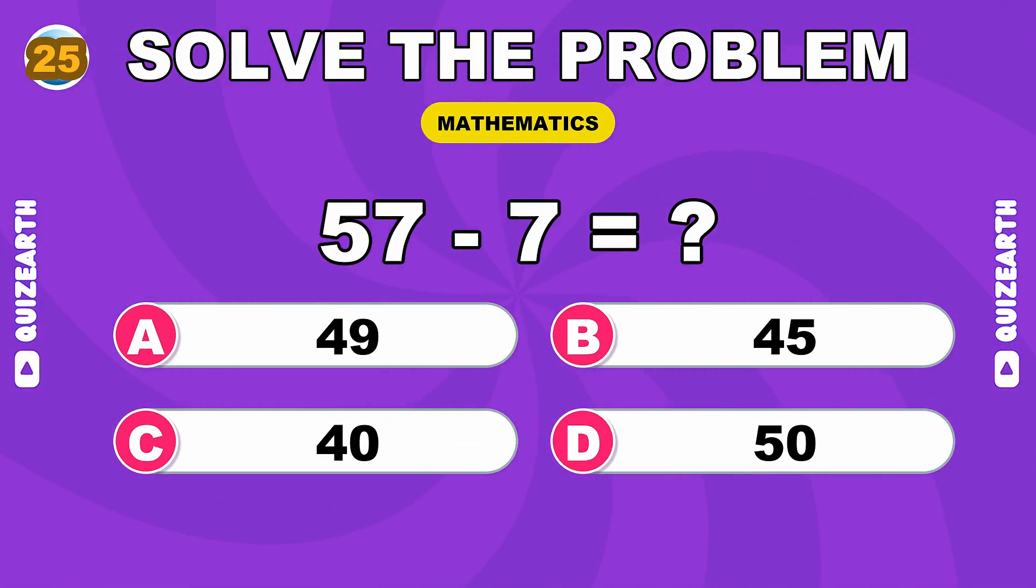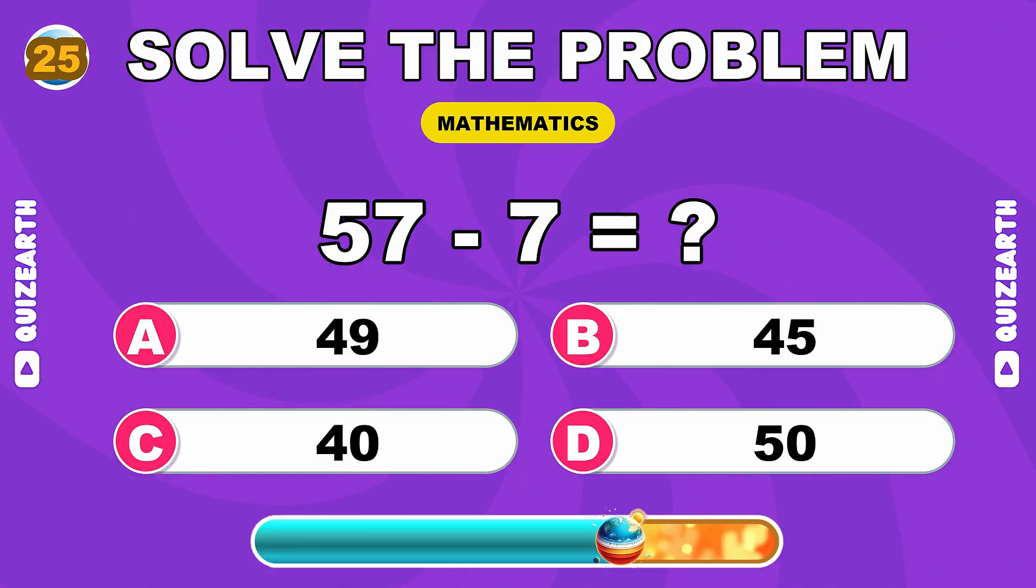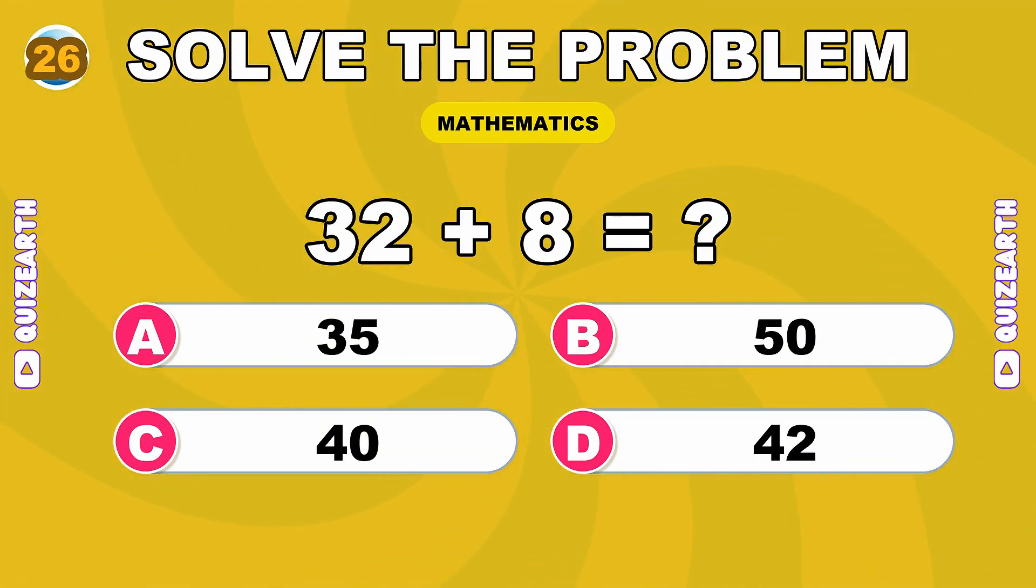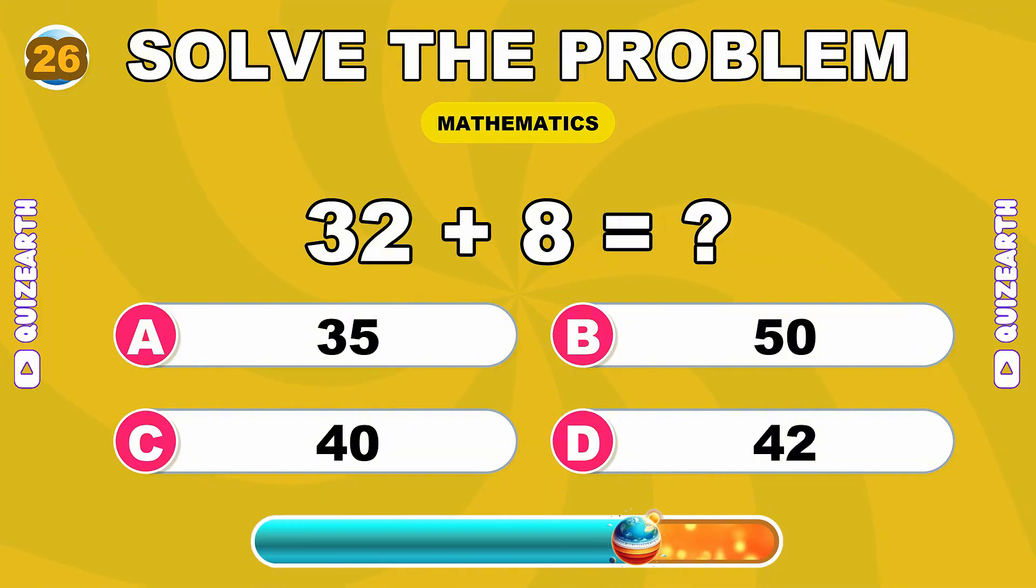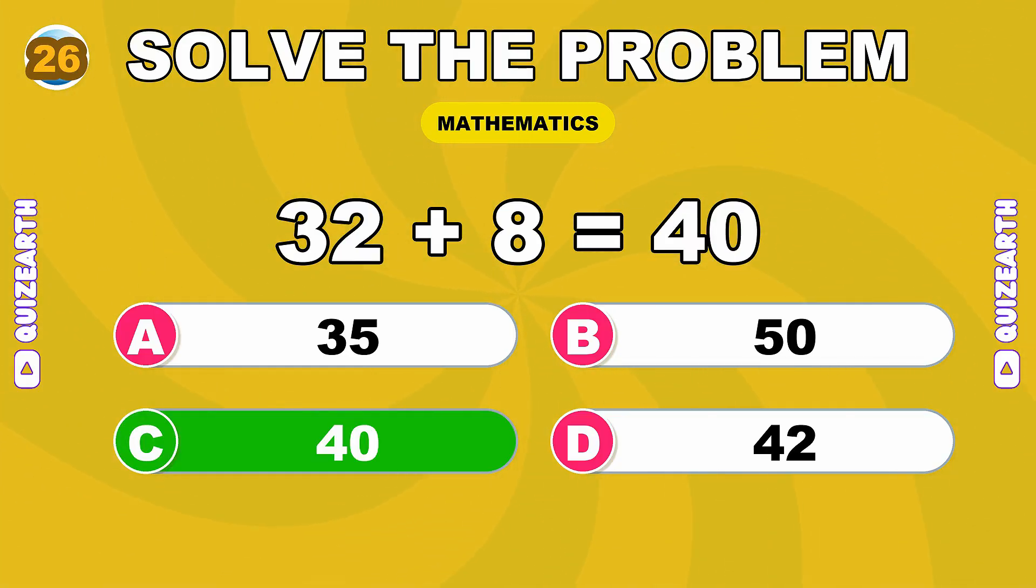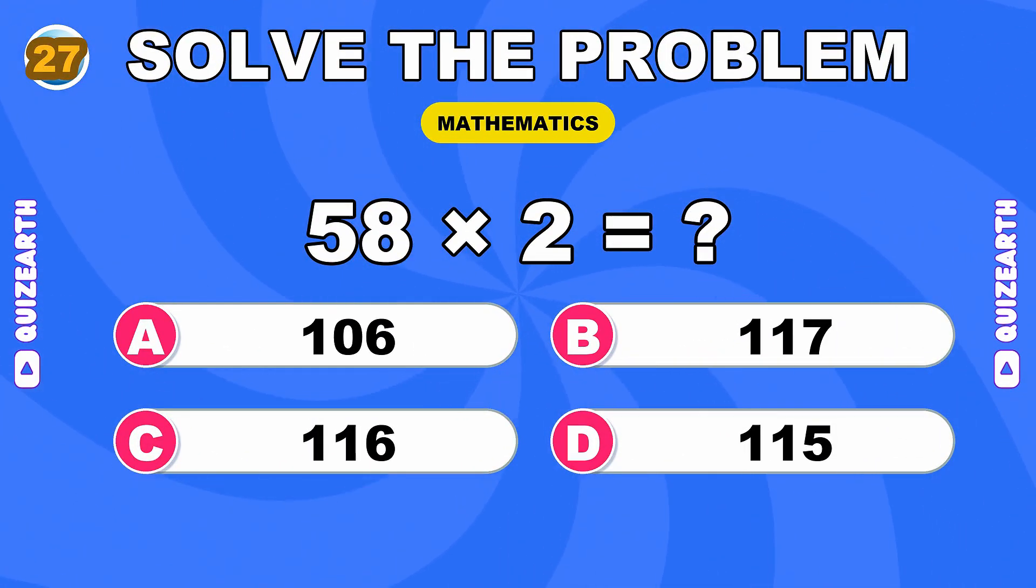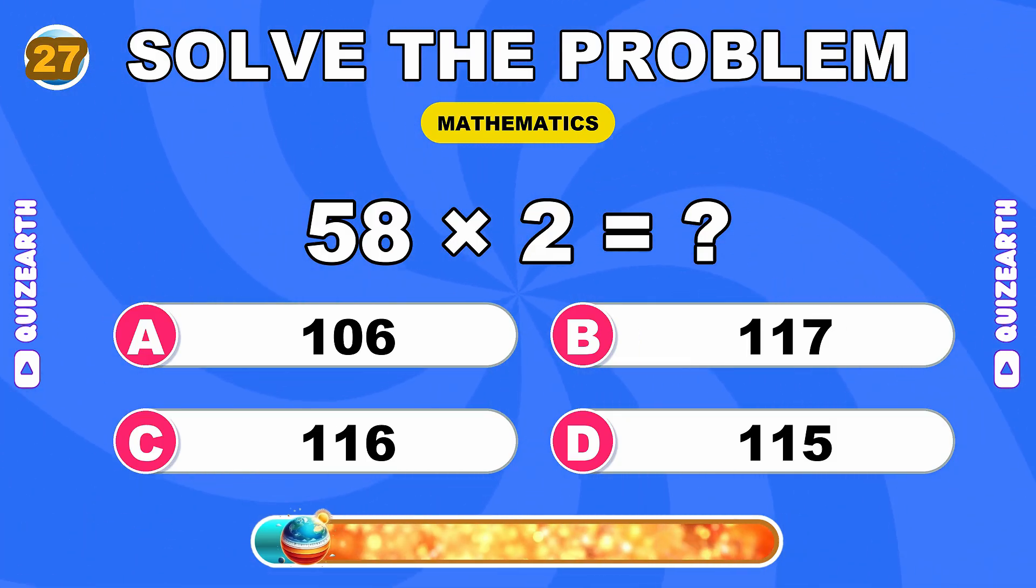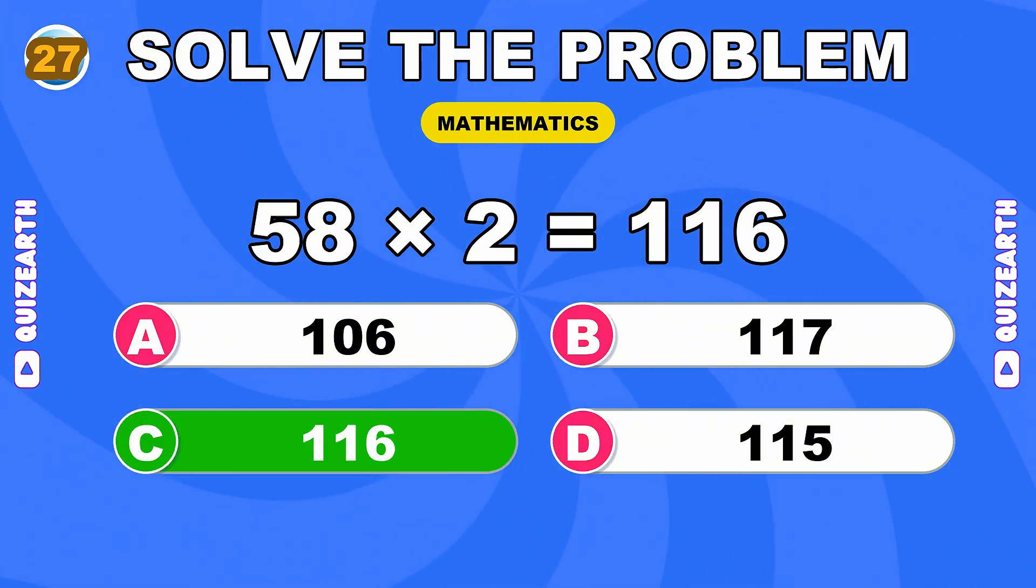What is 57 minus 7? Unbelievable, 40. What do you get when you multiply 58 by 2? You're a natural, 116.